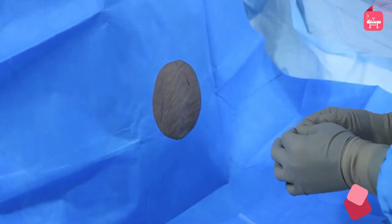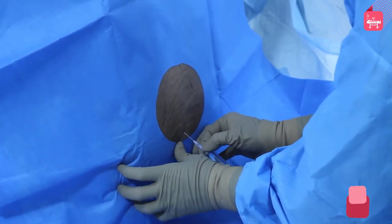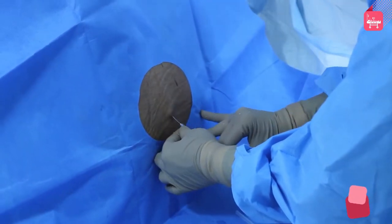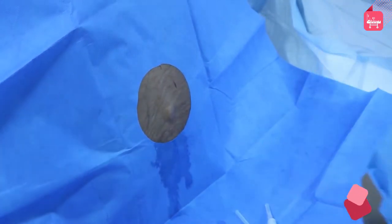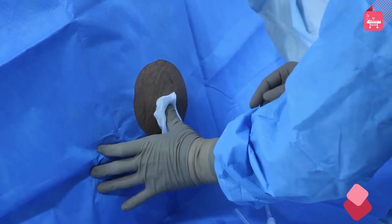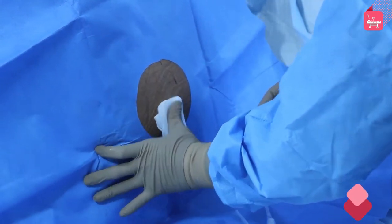Disinfect the puncture site using povidone iodine or alcohol-based chlorhexidine and apply it in a centrifugal manner. Anesthetize the patient by injecting 1% xylocaine and spread gently.